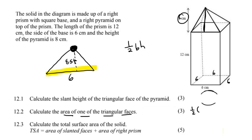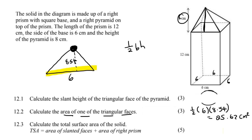So now we can work it out: Area = ½ × base × height = ½ × 6 × 8.54 = 25.62 centimeters squared.